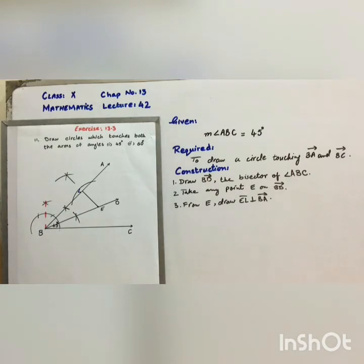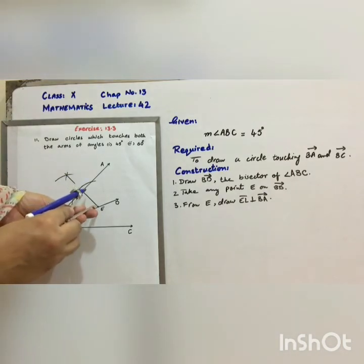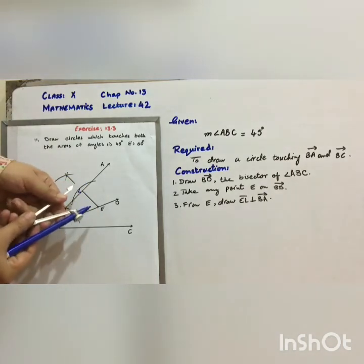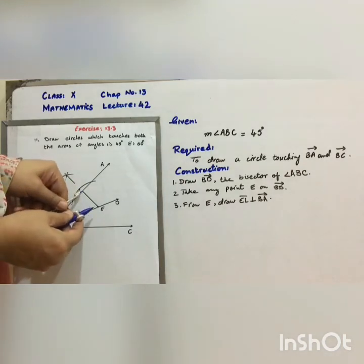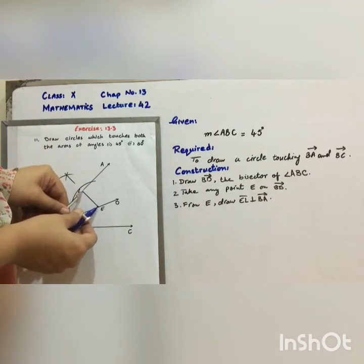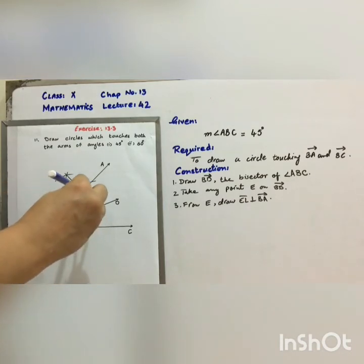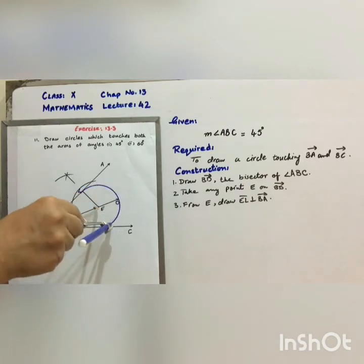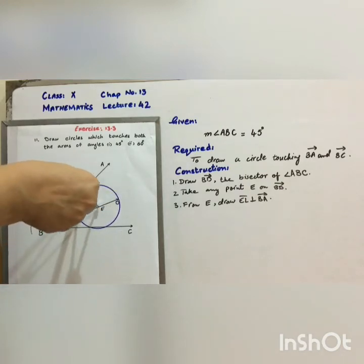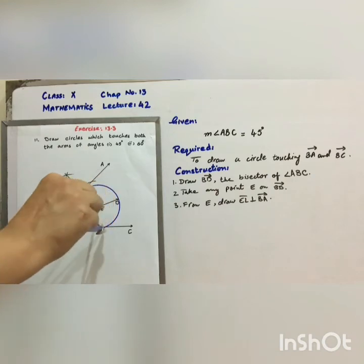Now, E is the center of the circle which we are going to form with center E and radius EL. With center E and radius EL draw a circle.